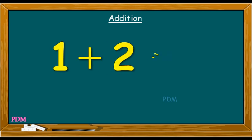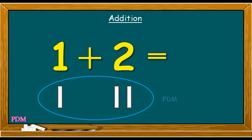One plus two. The first set of lines stands for one and the second set of lines stands for two. When we add them both together, the sum comes one, two, three. Therefore, the sum of one plus two is equal to three.